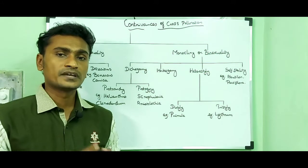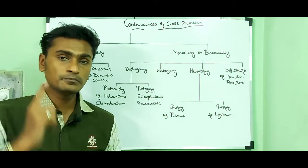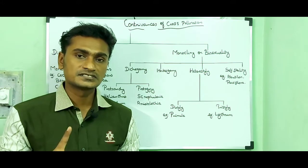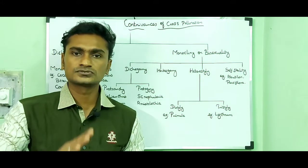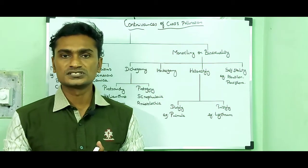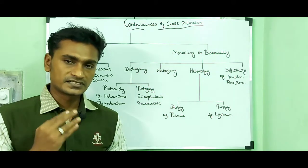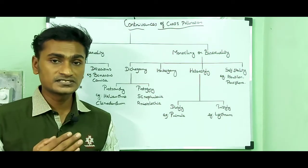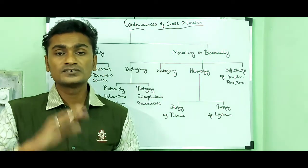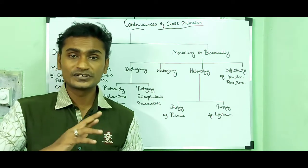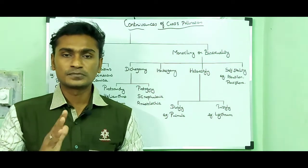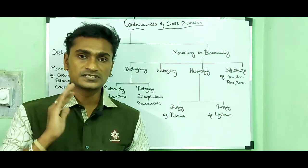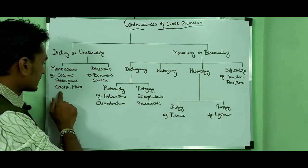Monoecious means the male flower and the female flower are present on the same individual plant. In this type, autogamy (self-pollination) is prevented, but geitonogamy is possible. Geitonogamy means the transfer of pollen grain from the anther to the stigma of the same plant. Examples: coconut, bitter gourd, castor, and maize.